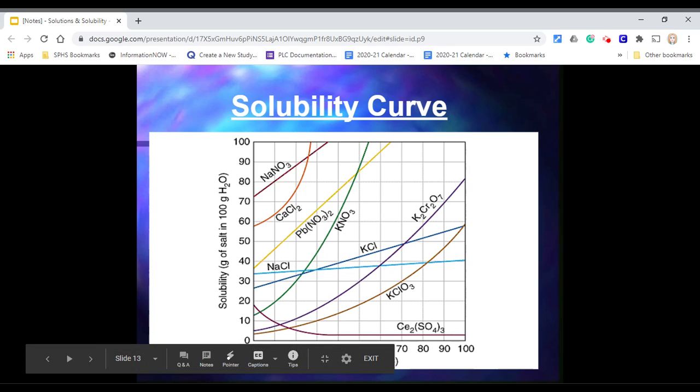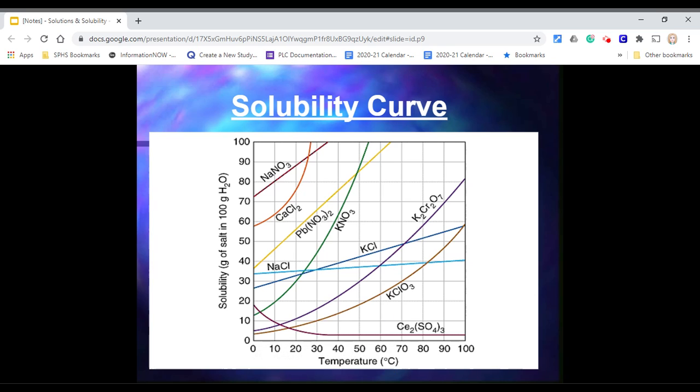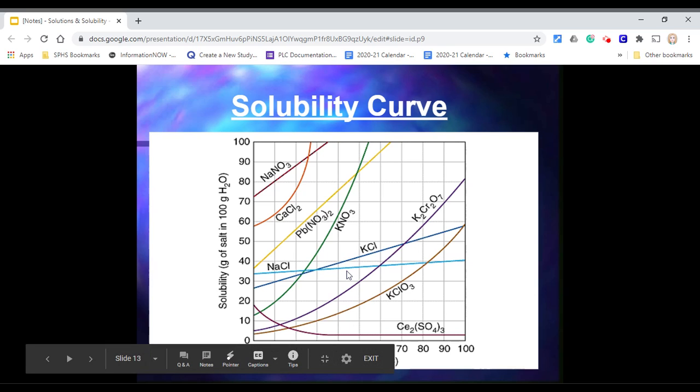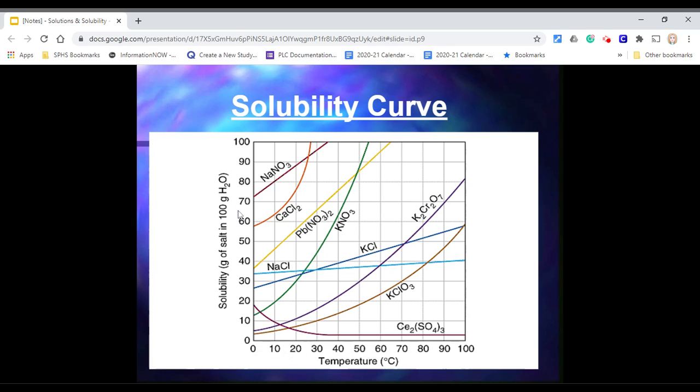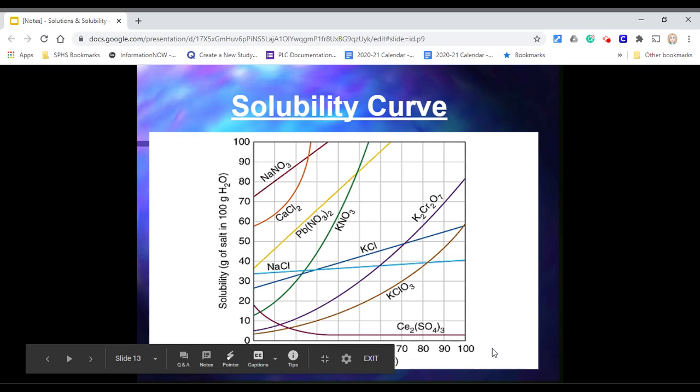Solubility curves are usually presented like this, where you have multiple salts or solutes in the same curve, and then you can compare the solubility of KCl to KClO3, and you can see that all of these are in 100 grams of water, and that's usually how they are. They're all in the same amount of solute so that you can compare how the temperature change affects the solubility.